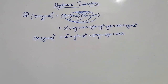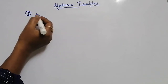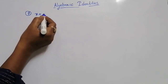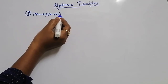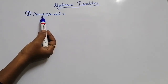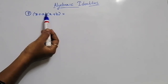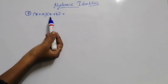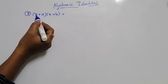Is it clear, students? Now the next one I am going to explain is x plus a into x plus b. Look here, students. The first term is x and the second term is a. This is a constant, not a variable. A and b are constants here. So how to do this one? Just multiply — apply distributivity.